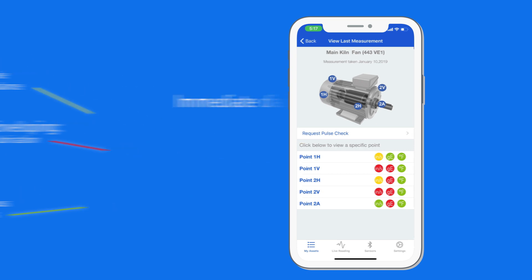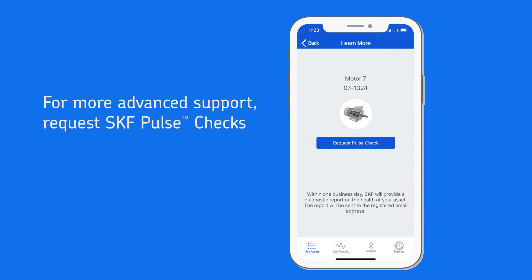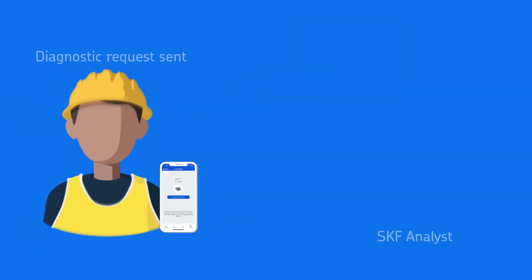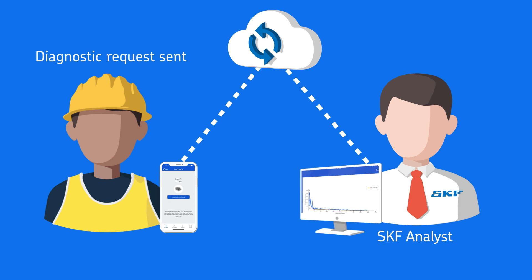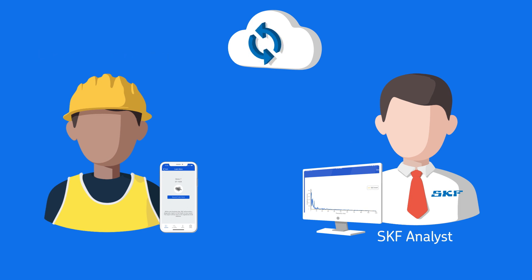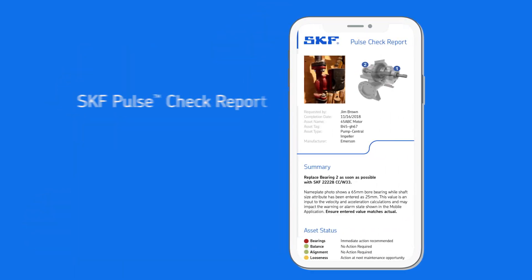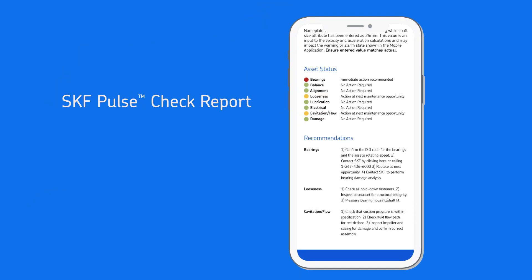SKF Pulse also provides immediate diagnostics via live readings. But if you need more advanced support, you can take advantage of over 100 years of SKF experience with rotating equipment. Simply use the app to request an SKF Pulse check and connect directly with SKF experts. Your request goes to the SKF Global Network of Rotating Equipment Performance Centers for Remote Diagnostics, where SKF experts, armed with industry-leading expertise and benchmarks, analyze the machine data and respond within one business day with a detailed report and recommended corrective actions if required.